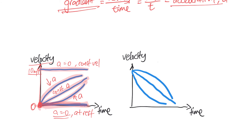Some students are confused and think decreasing acceleration means the car is slowing down. That's a misconception. If you look at the y-axis, as time goes by the velocity is still increasing — it's just that every second the increment is getting smaller and smaller. So decreasing acceleration does not mean the car is decelerating.